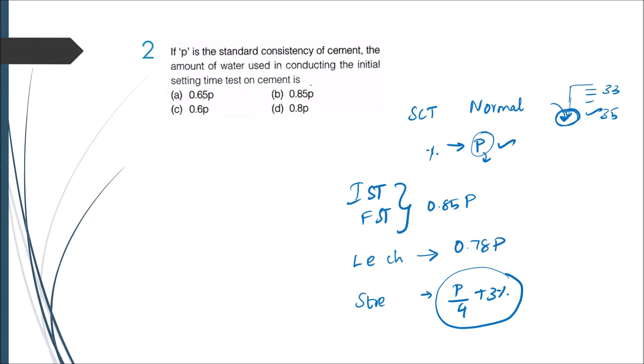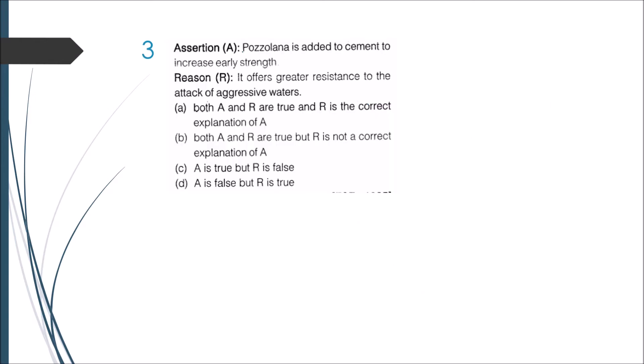Next there is an assertion: Pozzolana is added to cement to increase the early strength. The reason is it offers greater resistance to the attack of aggressive waters. First, the assertion itself is wrong because pozzolana is an additive which is added to cement that increases the later stages of strength, whereas early strength gain is very less. Adding pozzolana will reduce the rate of gaining strength for the cement. Therefore this assertion is wrong.